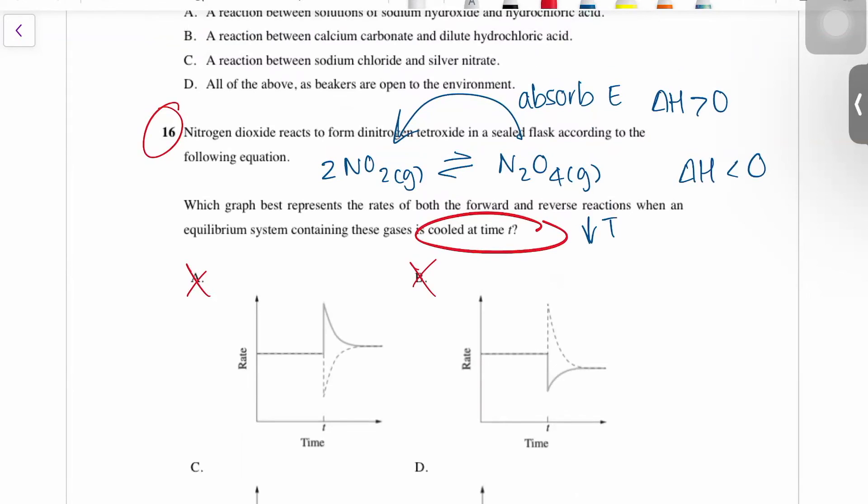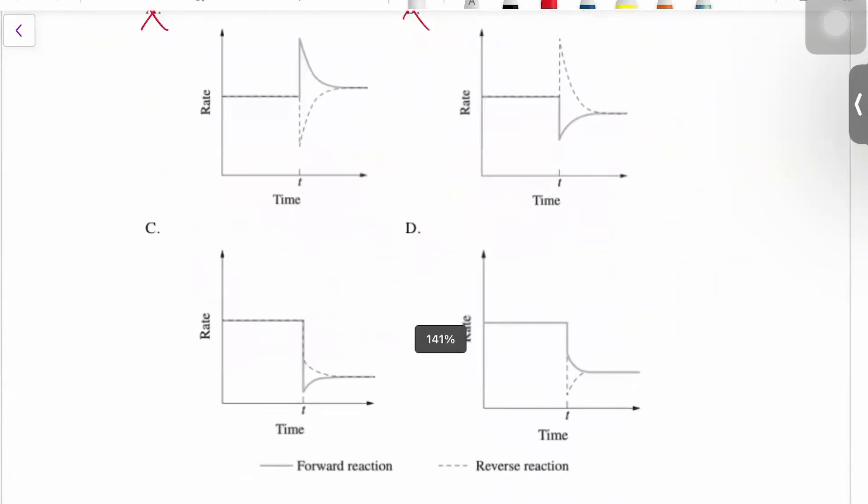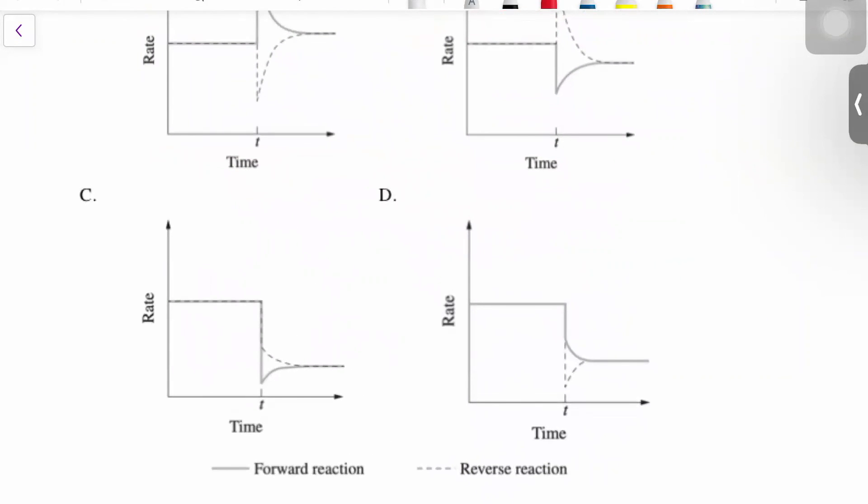And then the exothermic reaction rate also going down, but not going down as much. So your answer for this one, because we've already crossed out A and B, the reverse reaction is your endothermic one. So it goes down more and that's your dotted line. And so your answer for this one has to be D.